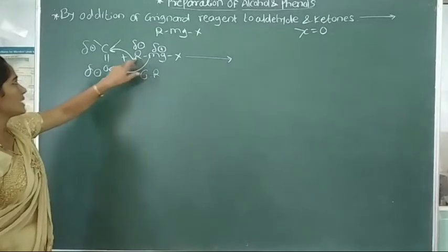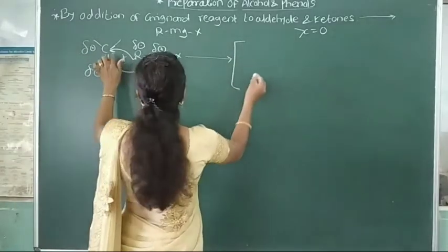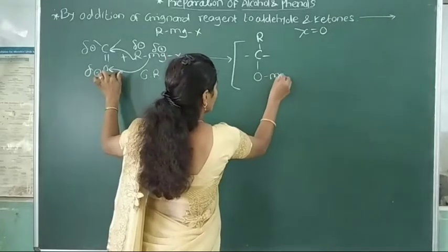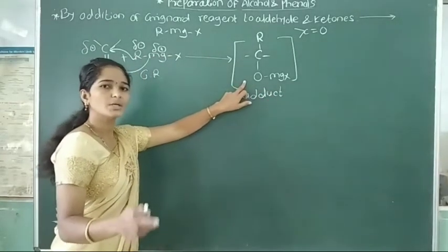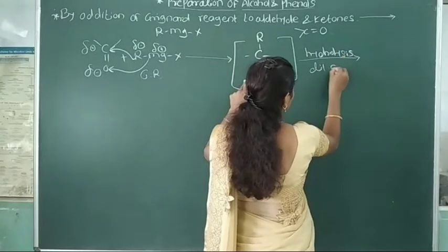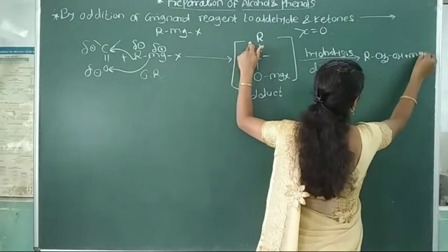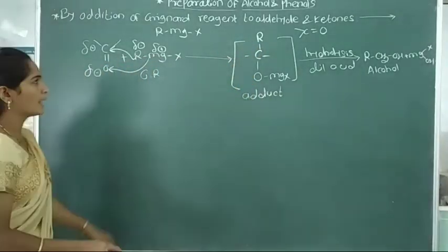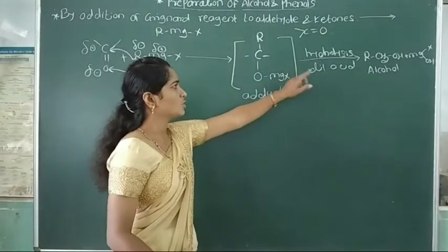The alkyl group adds to the carbonyl carbon and MgX adds to the oxygen atom, forming a clear adduct. This adduct then undergoes hydrolysis with dilute acid to give the alcohol. This is the reaction for formation of alcohol by addition of Grignard reagent into aldehyde and ketone — first formation of adduct, then hydrolysis.